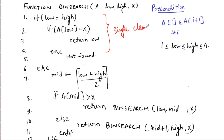Before starting any algorithm, a pre-condition has to be assumed. The first condition is that the values of low and high must be within 1 to n, with low less than or equal to high. The second condition is based on the assumption that the elements should be sorted. That is the pre-condition. Once this pre-condition is established, we can proceed to examine all of the pseudo code.